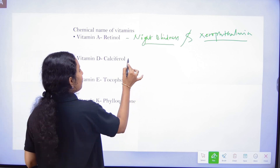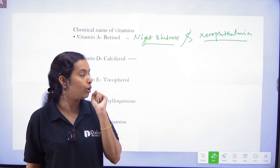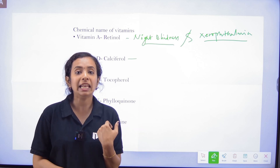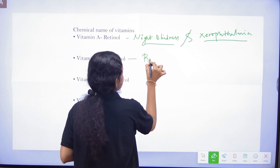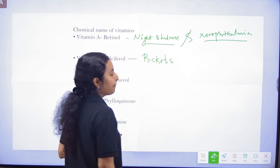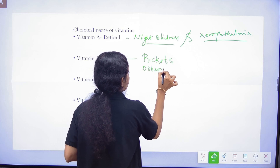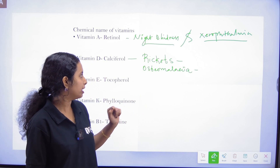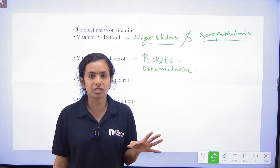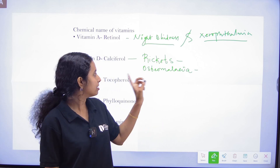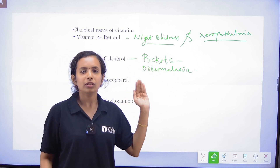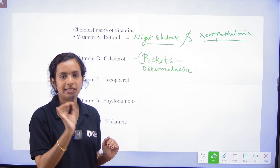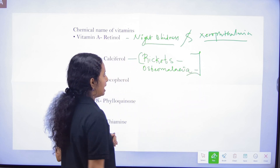Vitamin D is Calciferol and it is associated with calcium. Vitamin D deficiency causes two conditions: Rickets and Osteomalacia. Rickets and Osteomalacia are both Vitamin D deficiency diseases.